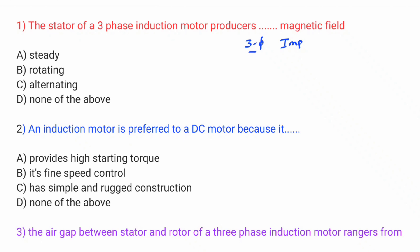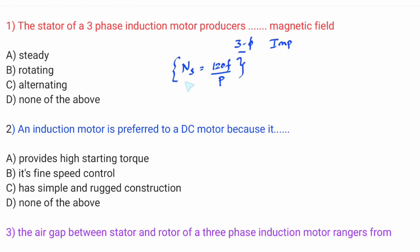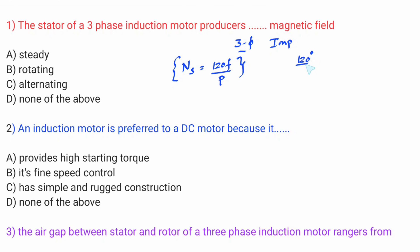For three-phase induction machines, the synchronous speed formula is Ns = 120 × f / P. This Ns is the synchronous speed — the upper speed. With three-phase supply applied, there is a 120-degree phase difference and 120-degree physical displacement, which produces a rotating magnetic field. The stator of a three-phase induction motor produces a rotating magnetic field at synchronous speed.